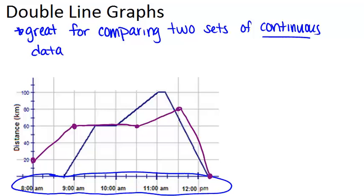So now this would be a double line graph because we have two line graphs on the same graph. And having both lines there makes it easier to compare what was going on.